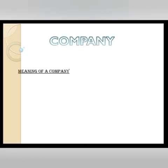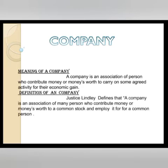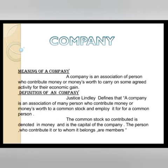Meaning of a company: A company is an association of persons who contribute money or money's worth to carry on some agreed activity for their economic gain. Definition: A company is an association of many persons who contribute money or money's worth to a common stock and employ it for a common purpose. The common stock so contributed is denoted in money and it is the capital of the company; the persons who contribute it or to whom it belongs are members.